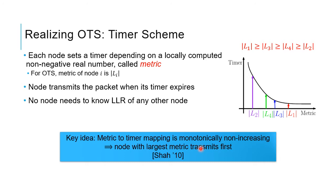It has been proved in the literature that OTS saves 50% of transmissions, yet it achieves the optimal error probability, same as the unordered transmission scheme. OTS requires the nodes to transmit in decreasing order of their absolute value of LLR. Since the nodes are separated from each other, no node knows any other node's LLR. It turns out one can implement this using a distributed timer scheme: each node sets a timer depending on a local metric, which for OTS is the absolute value of Li for node i. The node transmits the packet when its timer expires. The metric-to-timer mapping is a monotonically non-increasing function, so the node with the largest metric transmits first. In the previous example, node 1 having the highest metric |L1| has the lowest timer value, so it expires first and transmits first.